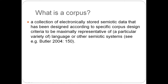Representative means that the corpus represents a valid sample of the language variety or semiotic system. When we find out things about the corpus, we can make conclusions about the language or semiotic system itself. In other words, the internet would not be considered a true corpus, as it wasn't designed according to specific criteria to be representative of a semiotic system.